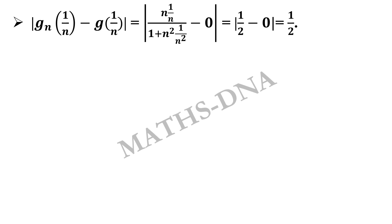Using these two we get mod of g_n of 1 upon n minus g of 1 upon n equals n into 1 upon n divided by 1 plus n square into 1 by n square, minus 0, that is equals to 1 by 2.